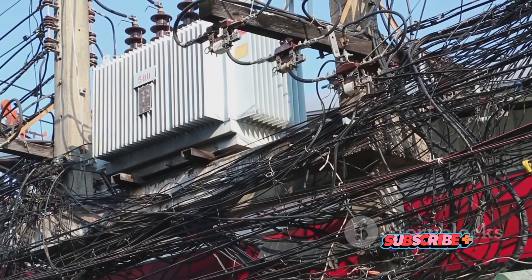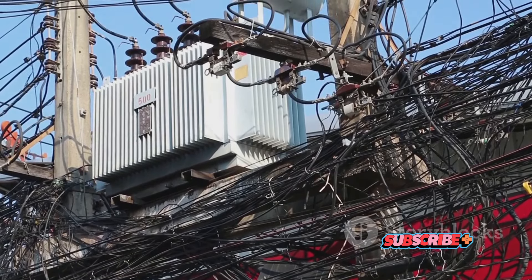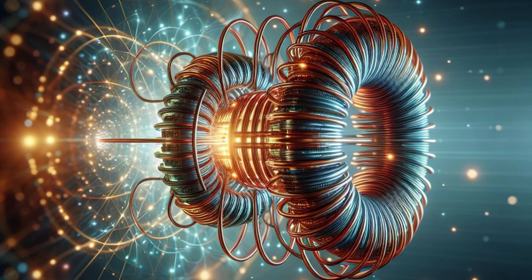Coils are also the core component of transformers, devices that transfer electrical energy from one circuit to another. By winding two coils around a common core, we can use the magnetic field generated by one coil to induce a voltage in the other, effectively transferring energy without a direct electrical connection. So you see, coils are not just spirals of wire, they are powerhouses of energy storage and transformation.